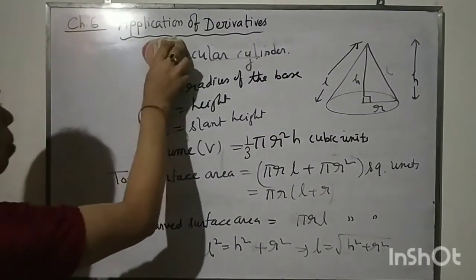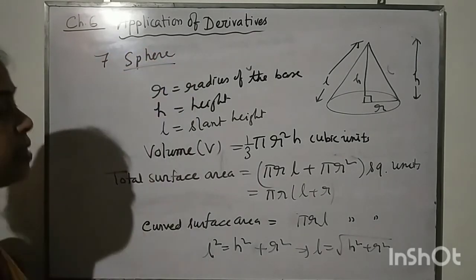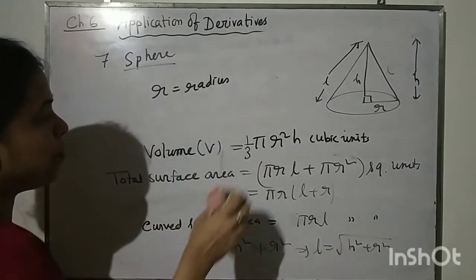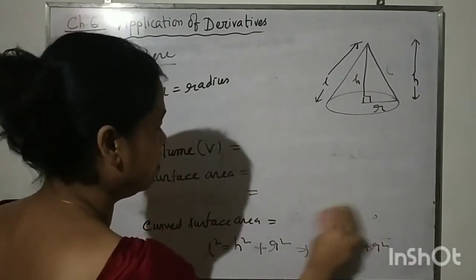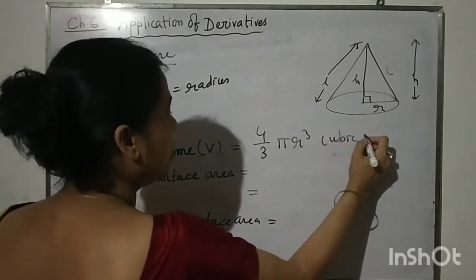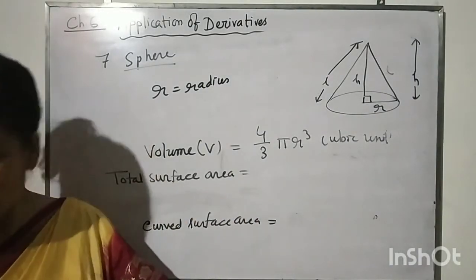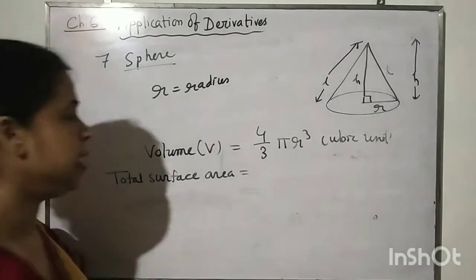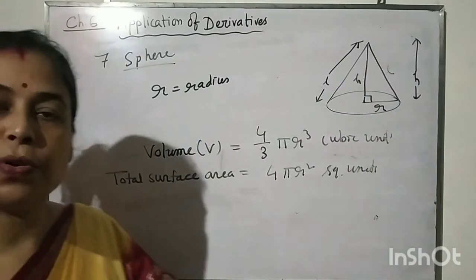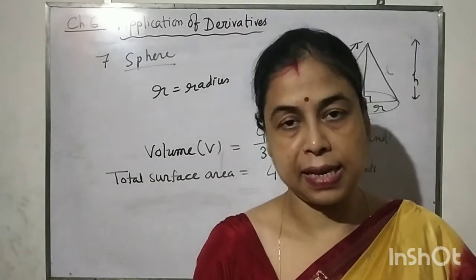Finally, let us consider a sphere with radius R. The volume is 4 by 3 pi R cubed, in cubic units. For a sphere, the total surface area and the curved surface area are the same since there is only one surface, and it equals 4 pi R squared, in square units. Try to remember all these formulas as they will be applied in this topic. Next time I will start Exercise 6.1. Thank you.